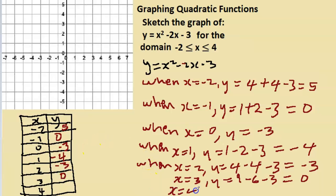When x = 4, y = 4², 4 times 4 is 16, and -2 times 4, that's -8, -3. 16 - 8 - 3 is positive 5. So we have our pairs of x, y values.